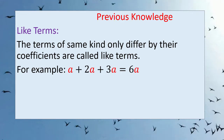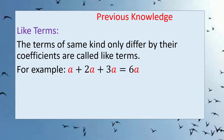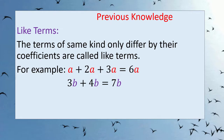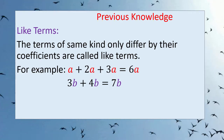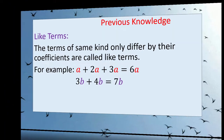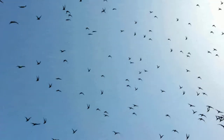Remember: if no coefficient is written with a variable, its coefficient is 1. When we add these terms, the answer is 6a. Next example: 3b plus 4b. In this example too, both terms have the same variable 'b', so when we add them, the answer is 7b.